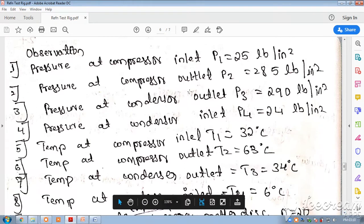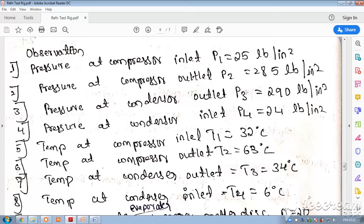The pressure at the compressor outlet and the condenser outlet are almost the same. As I told you, there are two pressures only: one is the evaporator pressure and the second is the condenser pressure. The evaporator pressure is the lower pressure and the condenser pressure is the higher pressure - that is 290 psi and here it is 25 psi.